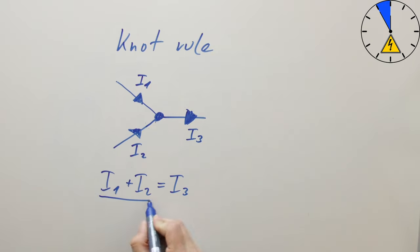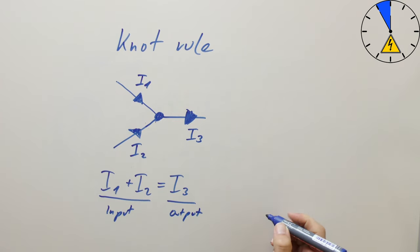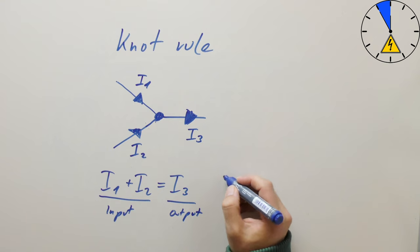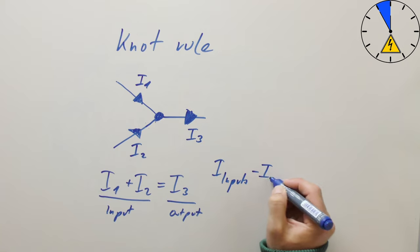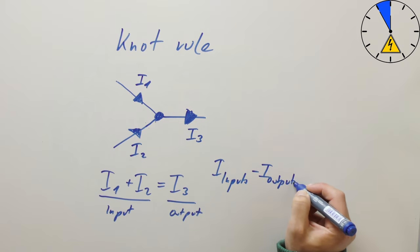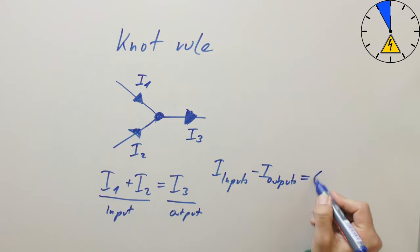So this is the input and this is the output. And if I put the current inputs minus the current outputs, it equals zero.